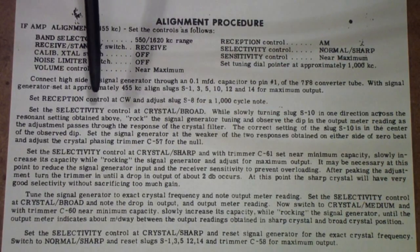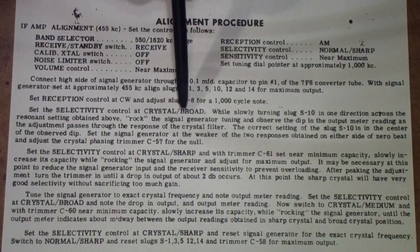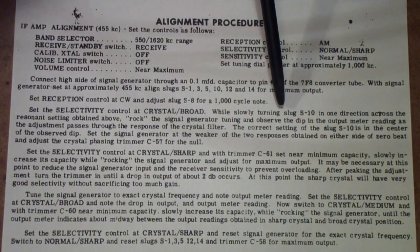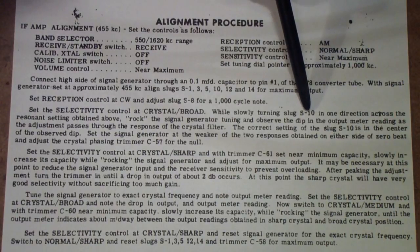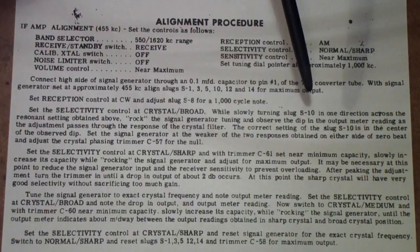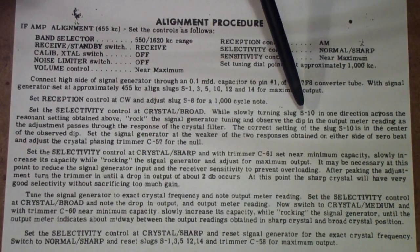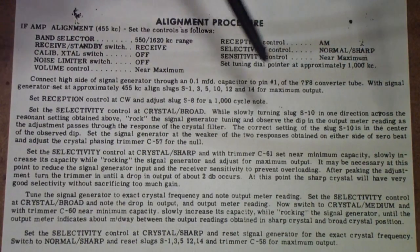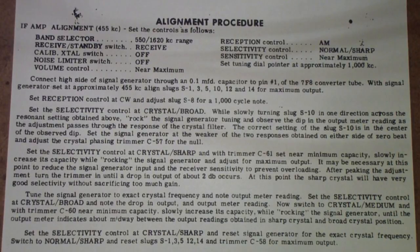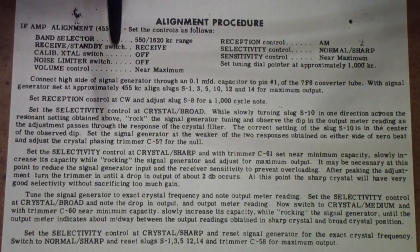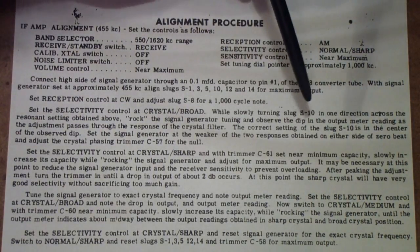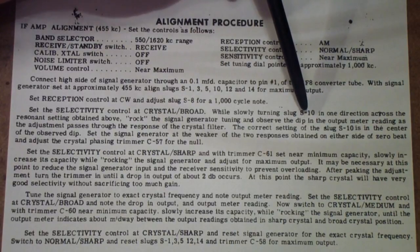the first thing you do is you set the selectivity control to crystal broad then you insert an alignment tool into the slug S10 and you begin rocking it back and forth that is adjusting the slug while you also rock the generator and by rock the generator what we mean is it's like rocking a cradle you're going from one side of the frequency to the other side up and down up and down and you're constantly rocking the generator